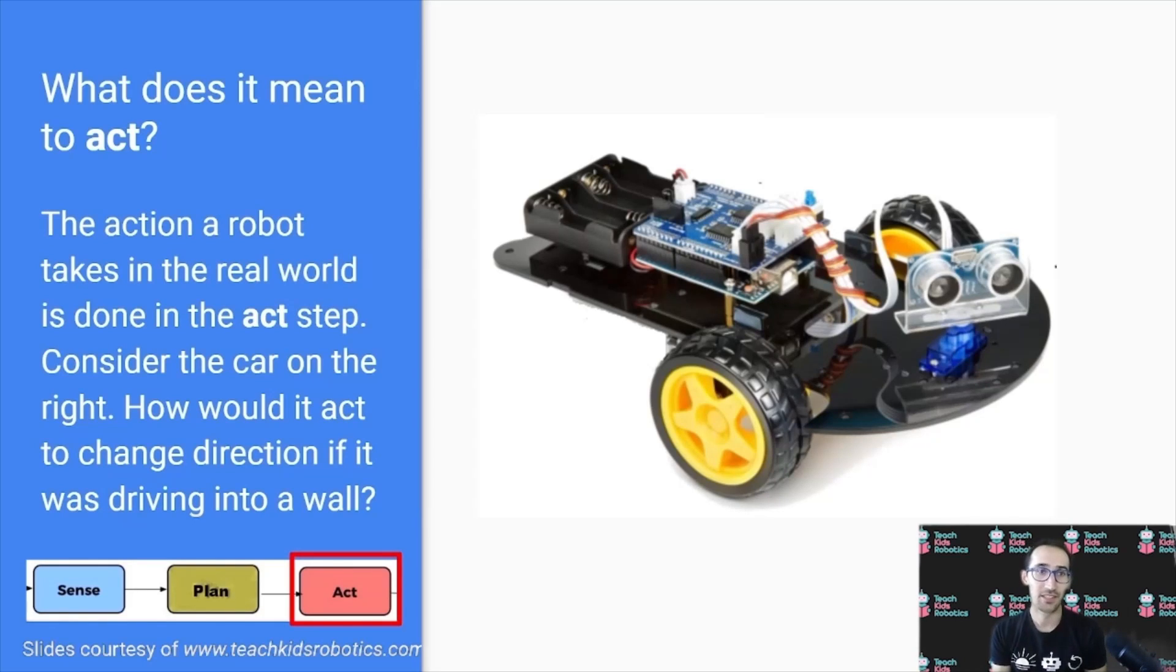Finally, what does it mean to act? The action a robot takes in the real world is done in the act step. Consider the car on the right. How would it act to change direction if it was driving into a wall?